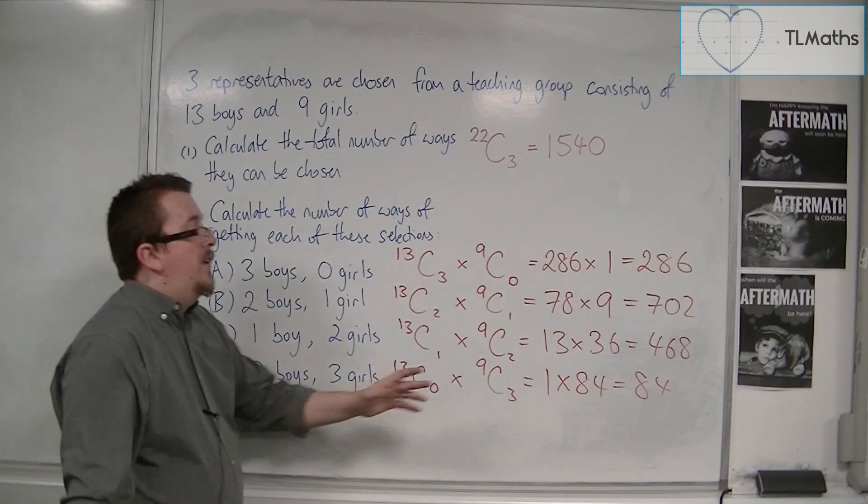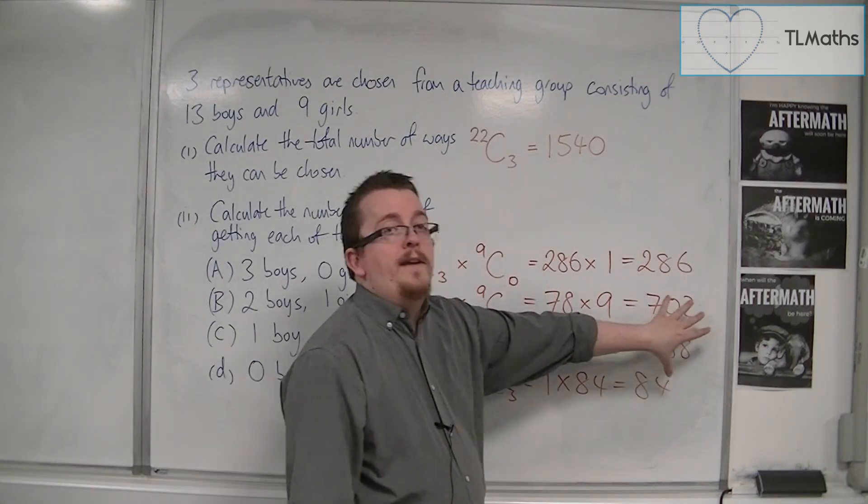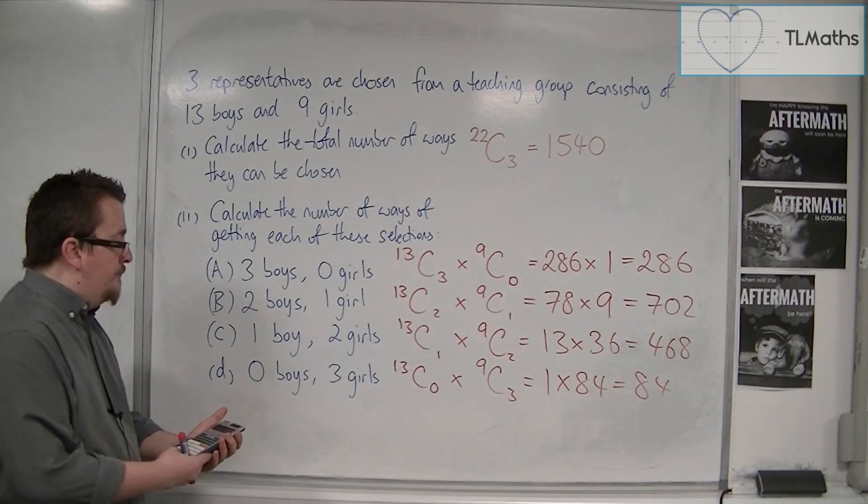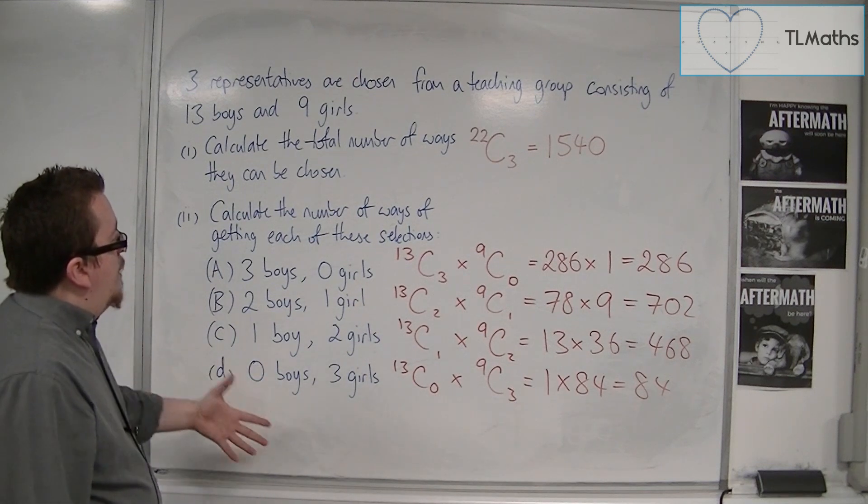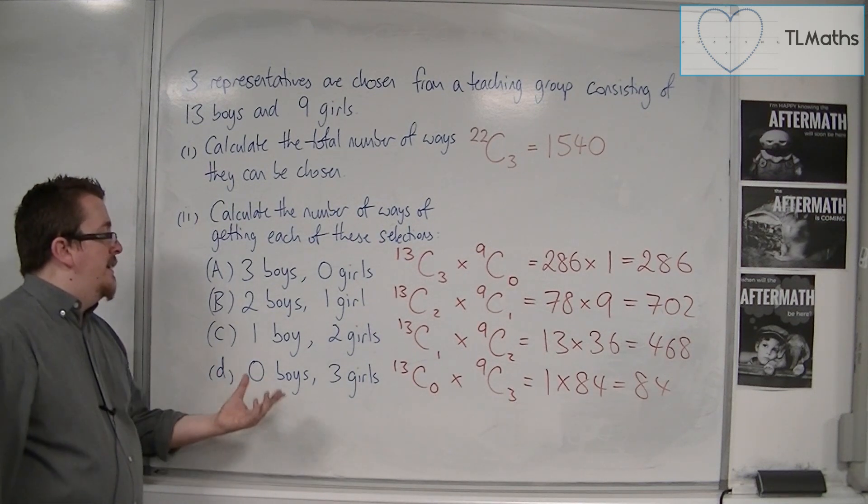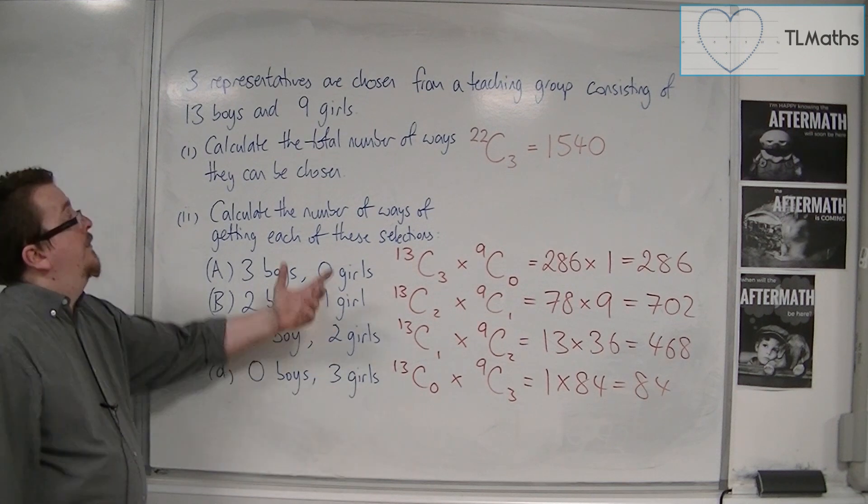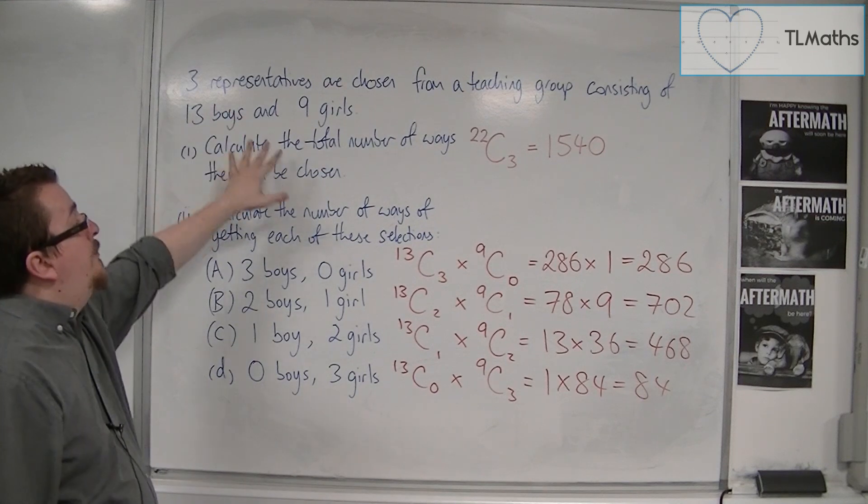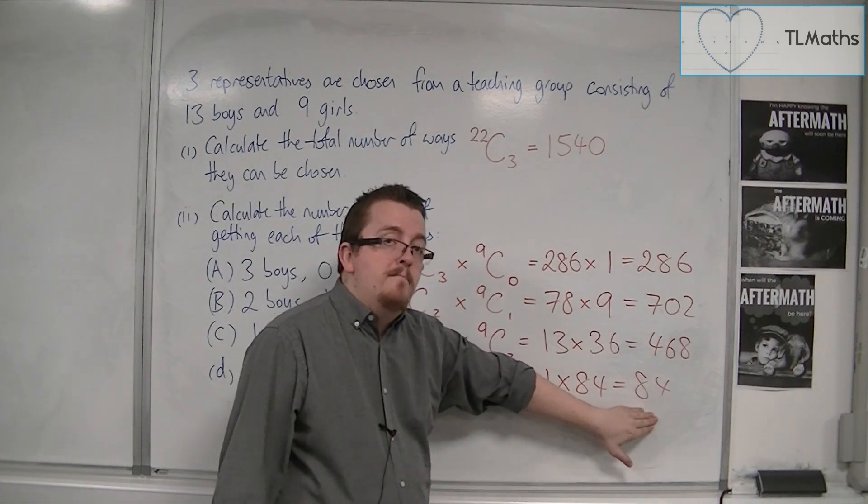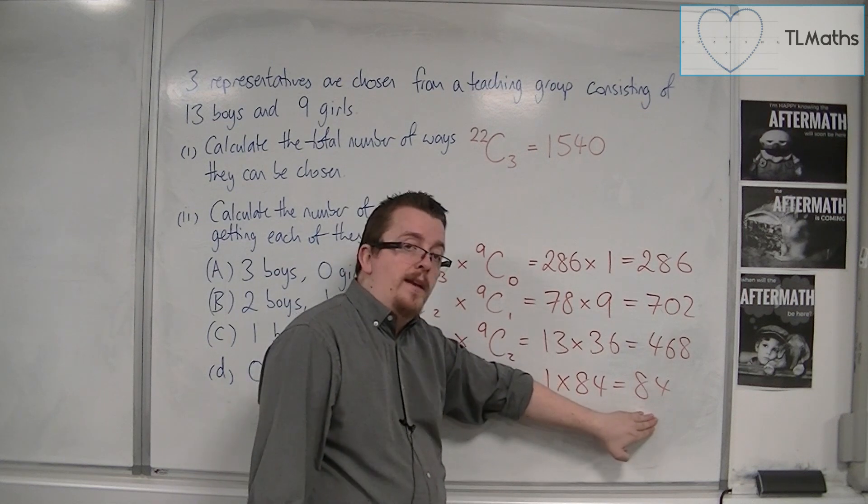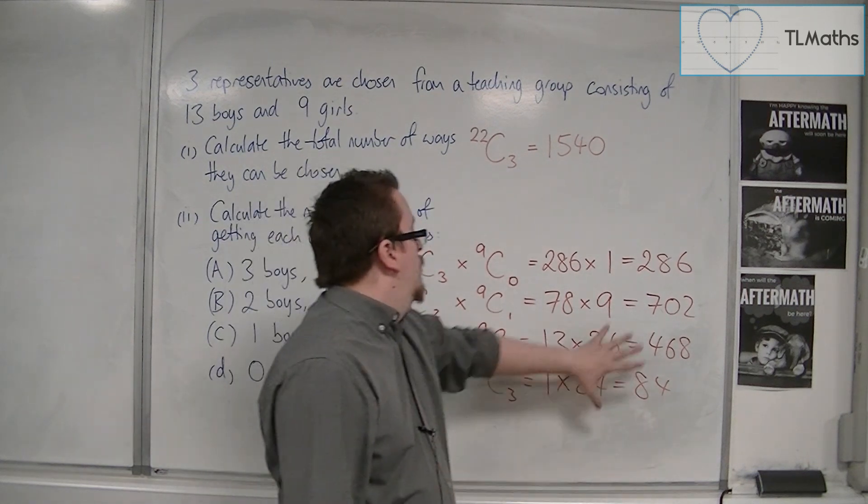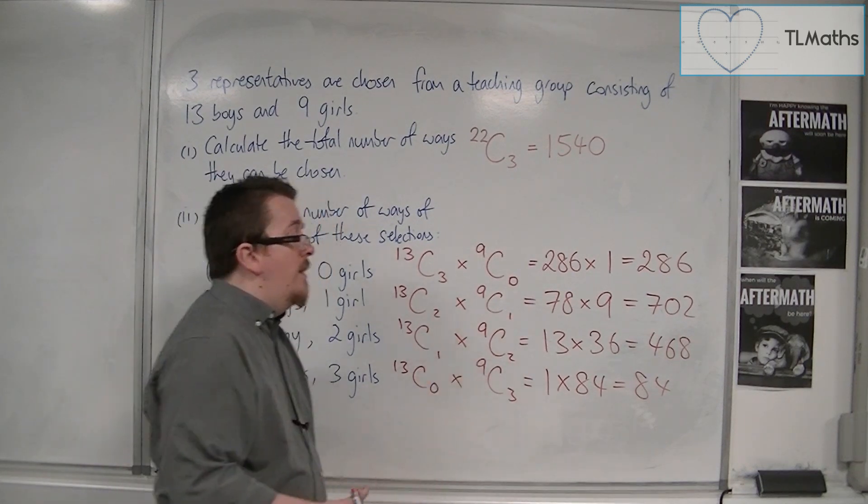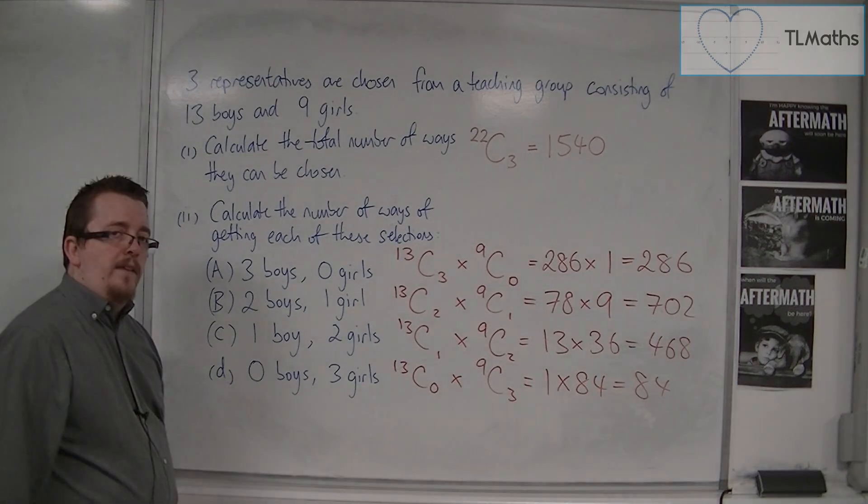So these are the number of possible ways of selecting these people. It makes sense that when we're looking at the number of ways of selecting 0 boys and 3 girls, if you think of this as a probability, the likelihood of that happening is quite small, and that's why there aren't that many possible ways of doing it in comparison with these.